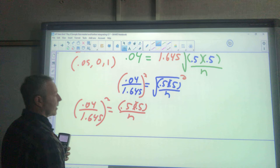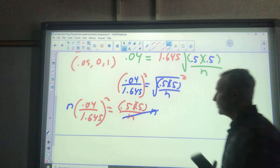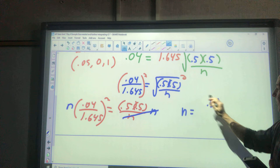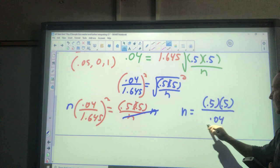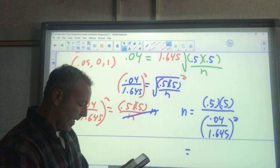And now I'm going to multiply by n and divide by this. So n ends up equaling 0.5 times 0.5 divided by 0.04 divided by 1.645 squared, and as we said earlier, I'll round up on this.